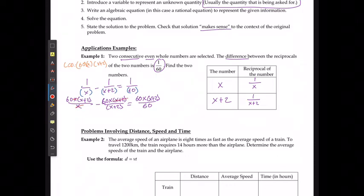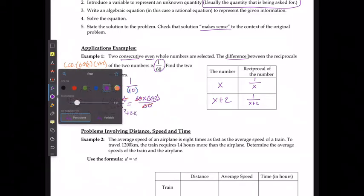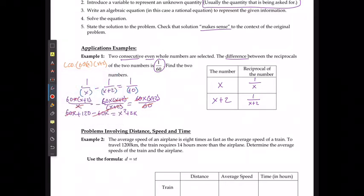This is going to leave me with 60 times x plus 2, which gives me 60x plus 120 minus 60x equals x times x plus 2, x squared plus 2x. The 60x and negative 60x will cancel each other out. So really what I have is when I move the 120 over, 0 equals x squared plus 2x minus 120, which means that I have 0 equals x plus 12 times x minus 10.